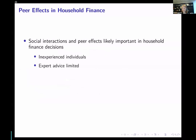Peer effects in household finance — why are we even talking about this? There's a sense that peer effects and social interactions are likely to be very important in household finance decisions. First, we have inexperienced individuals. There are many household finance decisions that people undertake only a couple of times, or maybe even only once in their lifetime — think about buying a house, buying a car, investing for retirement.